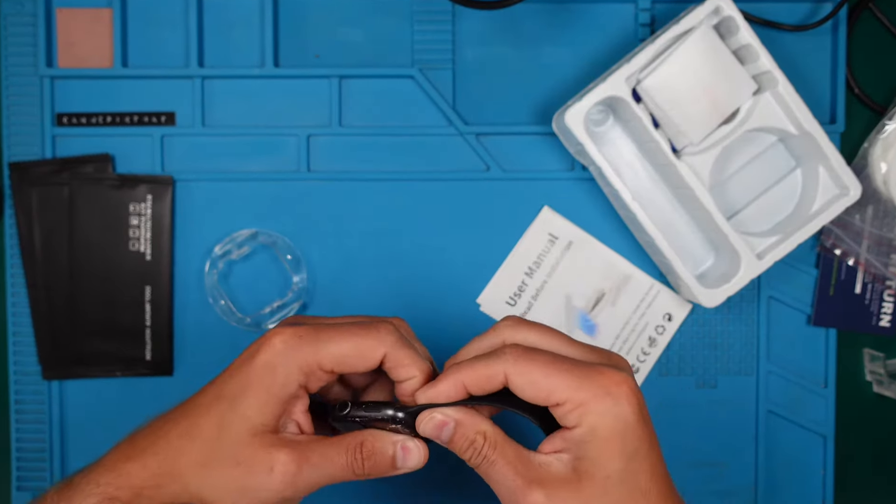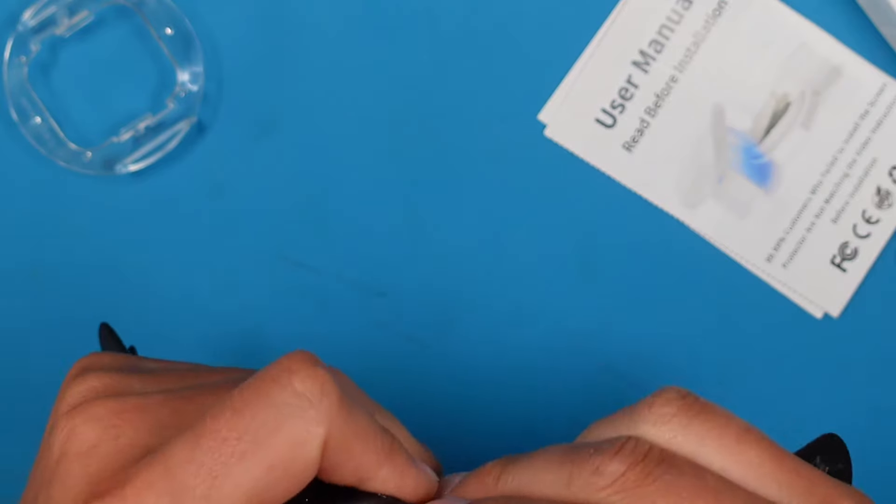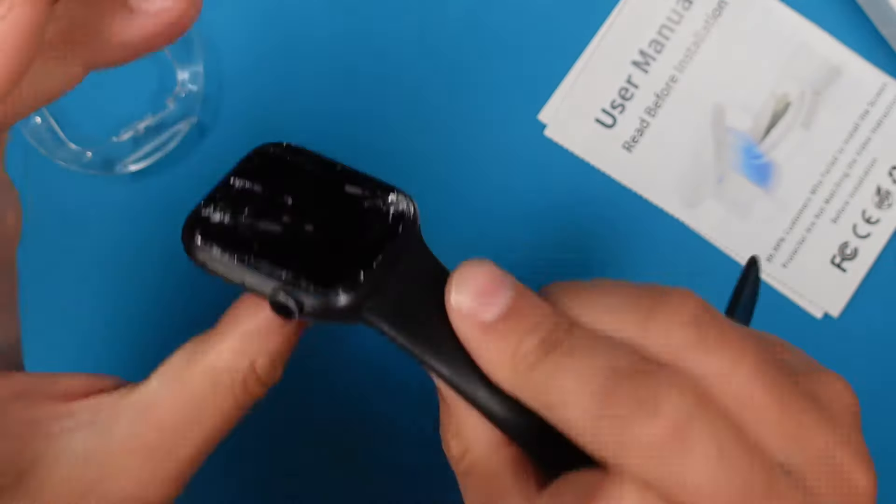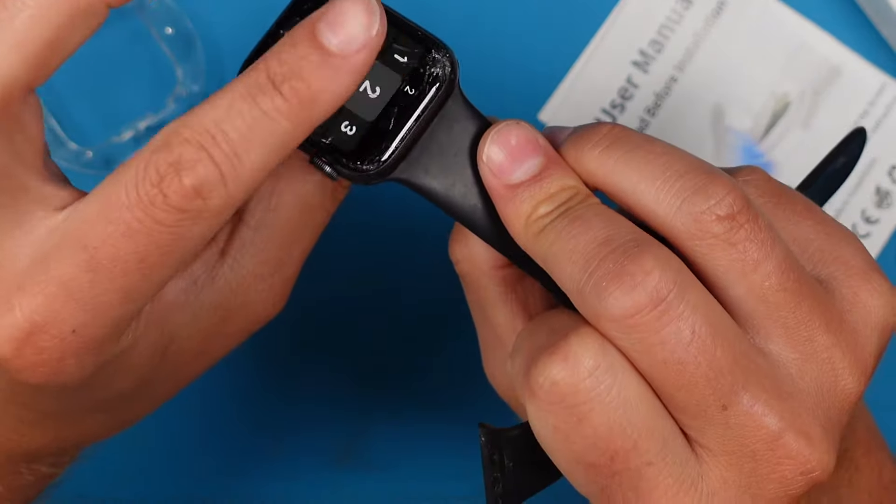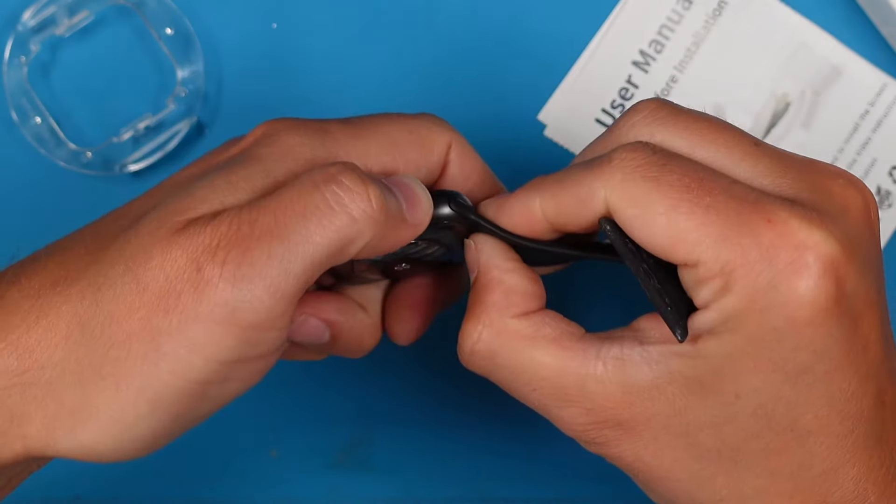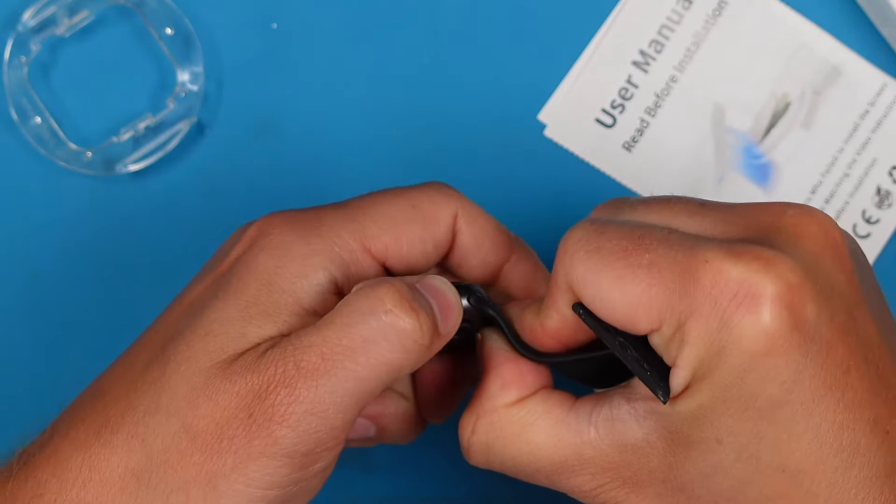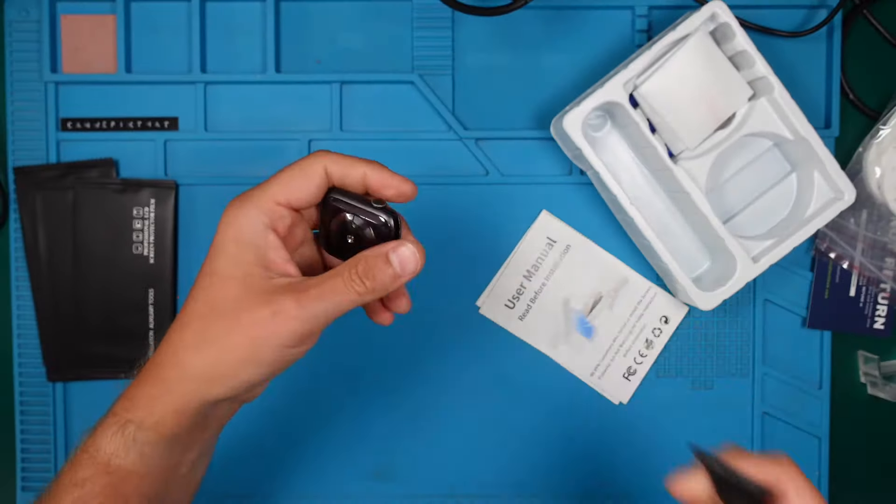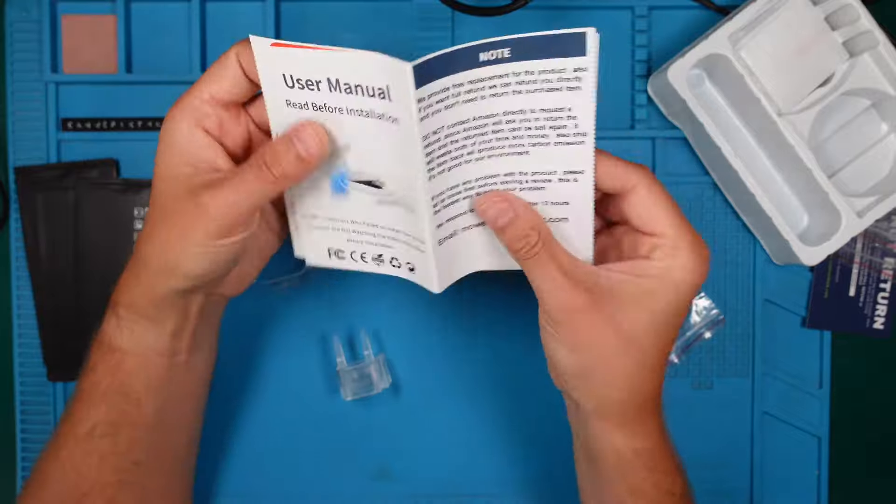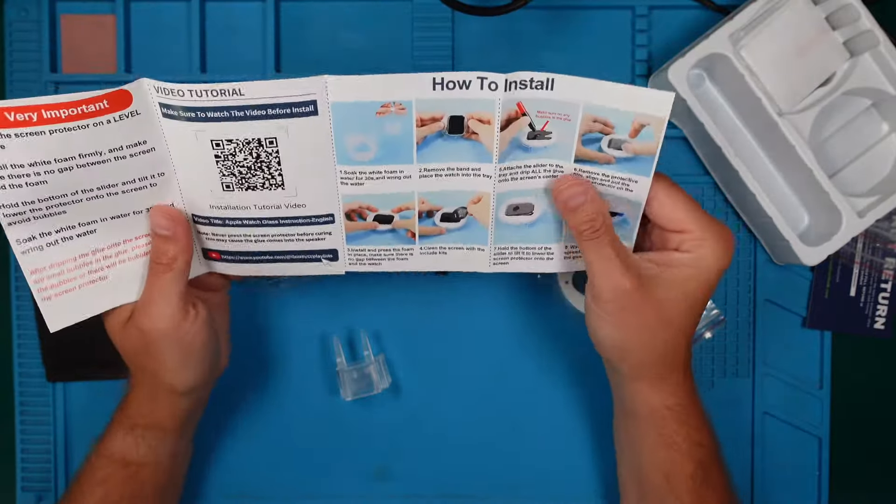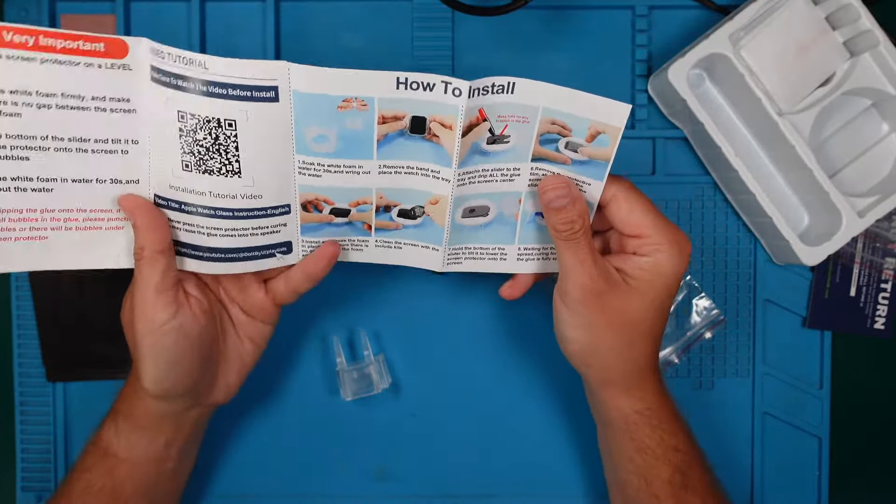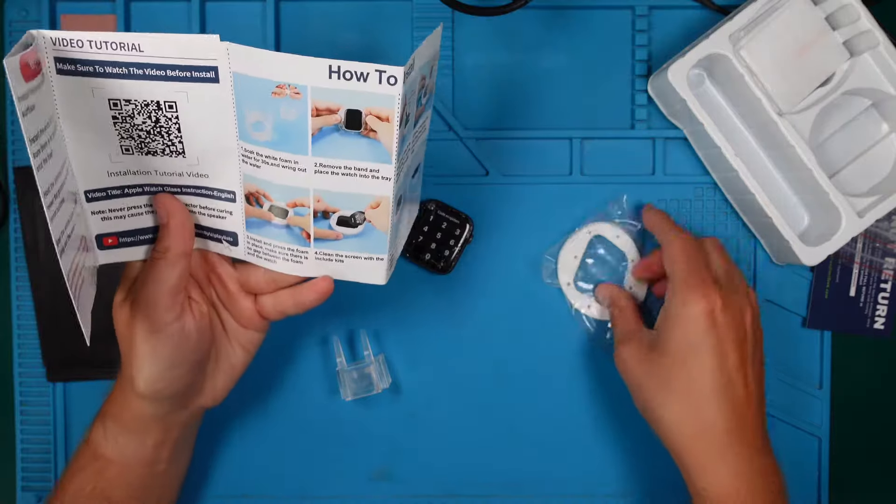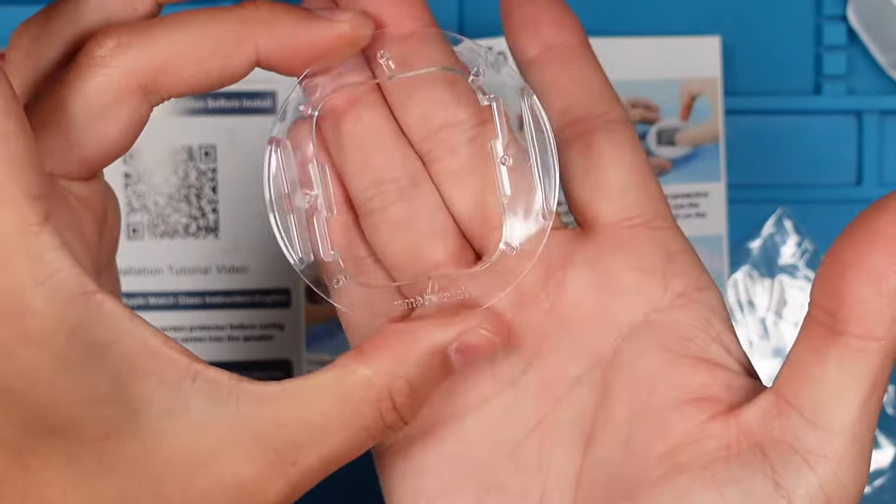First remove the straps here. Please make sure not to do a lot of pressure here, otherwise you maybe shatter it even more. Let's have a short look in the user manual. Here's also the video for the installation from the manufacturer. Basically you have this mount here where we just clip in our watch.